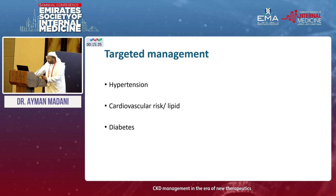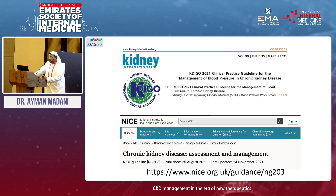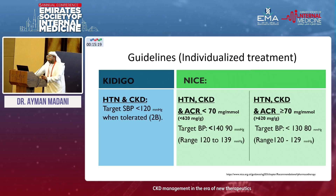We'll now move on to target therapy, looking at hypertension, cardiovascular disease, and diabetes management — mostly from the KDIGO Kidney Disease Improving Global Outcomes guidelines, or the NICE Chronic Kidney Disease guideline. Regarding hypertension, we have two numbers: KDIGO guidelines are strict, expecting blood pressure less than 120, while NICE gives a bit of leeway at 130 to 140. You have to individualize therapy to the patient's age and comorbidities.